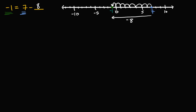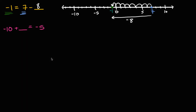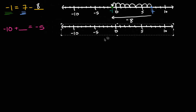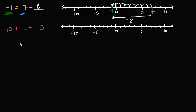Let's do another one of these — this is kind of fun. Let's say we have negative ten plus blank is equal to negative five. What would the blank be in this case? Let's give ourselves a number line again. We are going to start at negative ten, and we're going to add something to it to get to negative five.